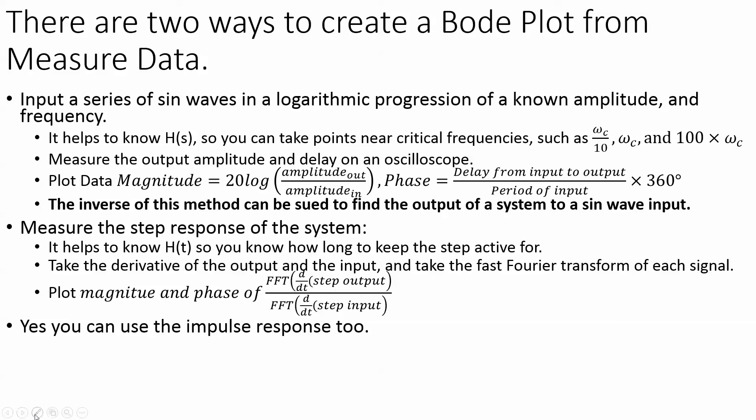Get the laser pointer going. You measure the delay from the input to the output, and divide that by the period of the input. And then that ratio you can put into 2π or 360. Now, because the output comes after the input, the phase has to be minus.